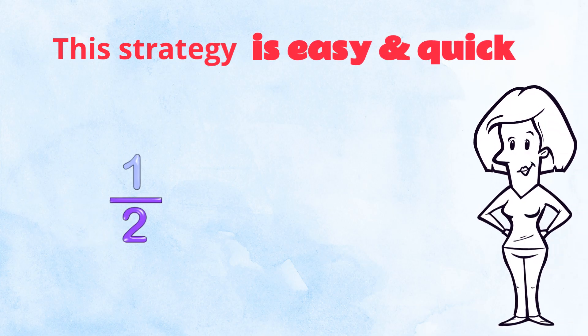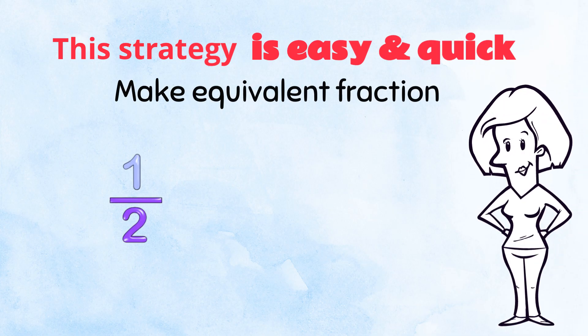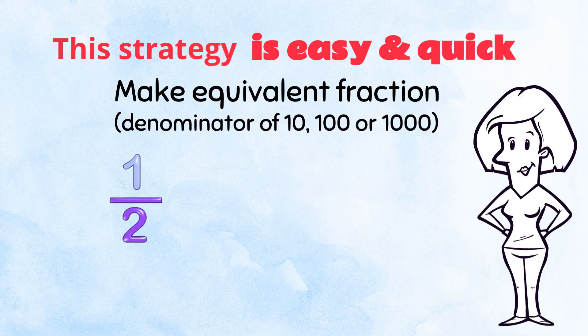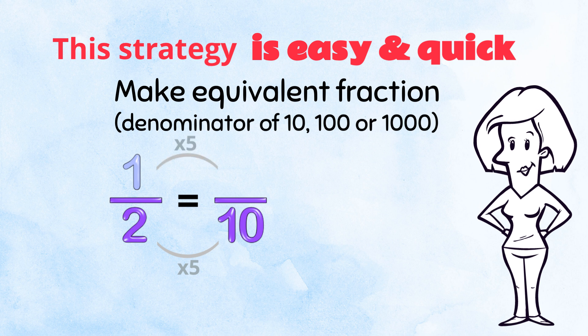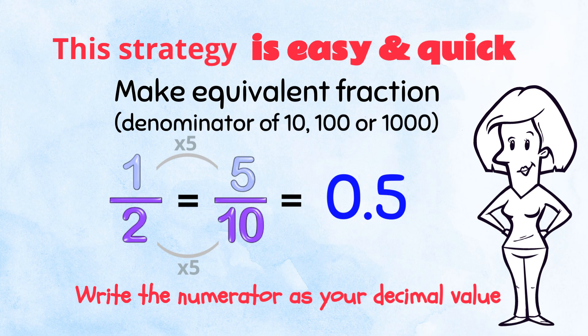This strategy is easy and quick! Make an equivalent fraction with a base-10 denominator. Keep it as low as you can, though. Always! Finish your equivalent fraction, then just write the numerator as your decimal value. Super easy!